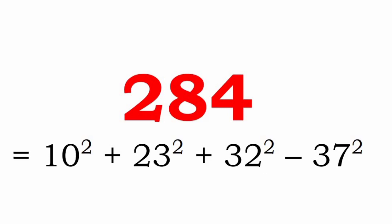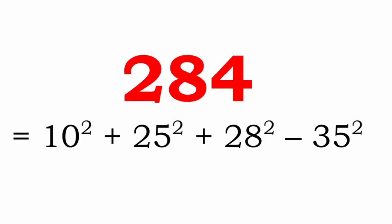Now another representation of 284 using exponentiation: 10² plus 23² plus 32² minus 37². Evidently the digits used here are 0, 1, 2, 3, and 7 only.